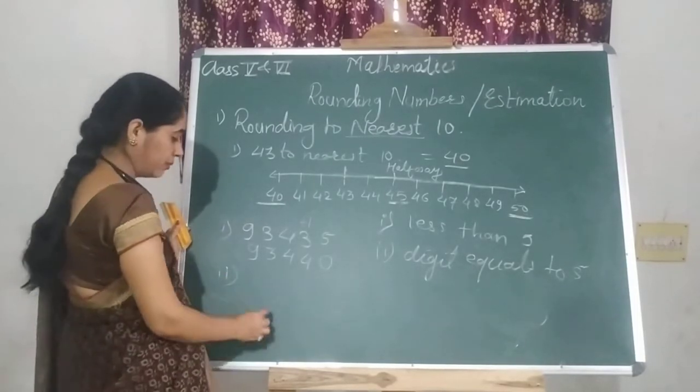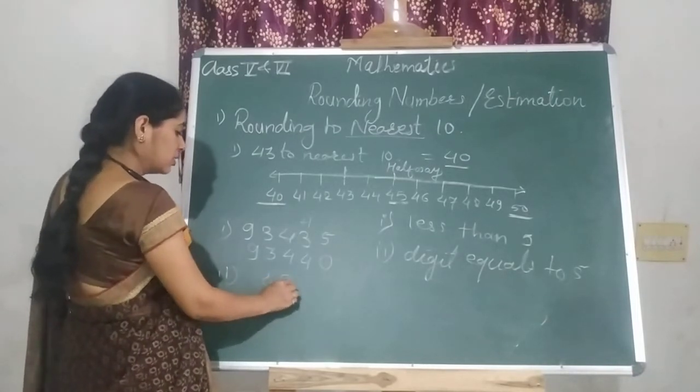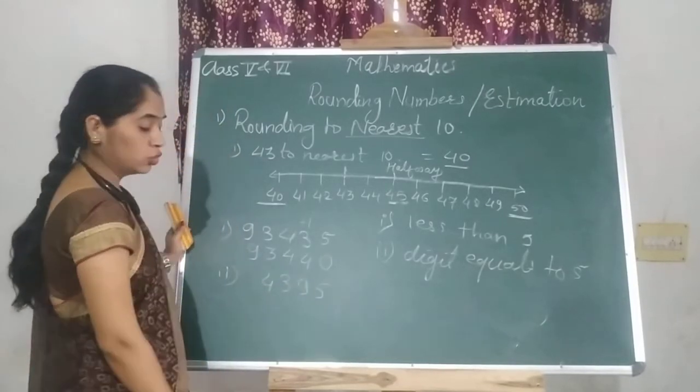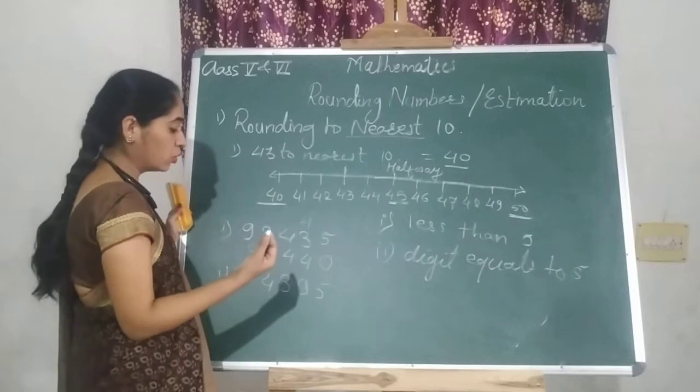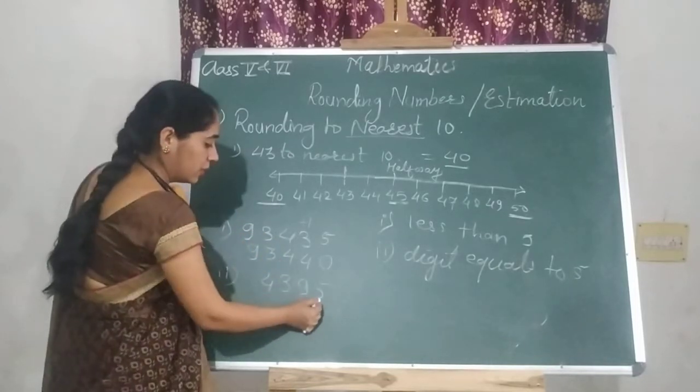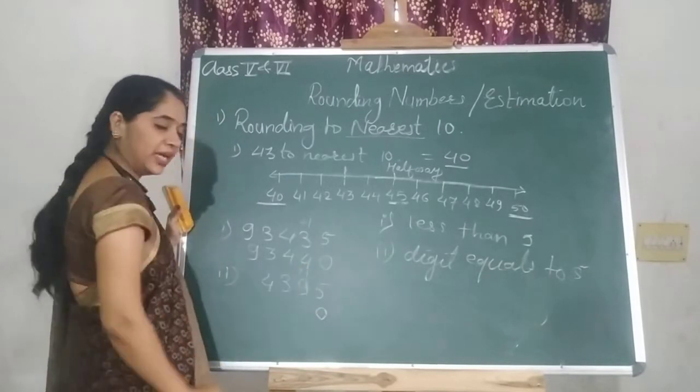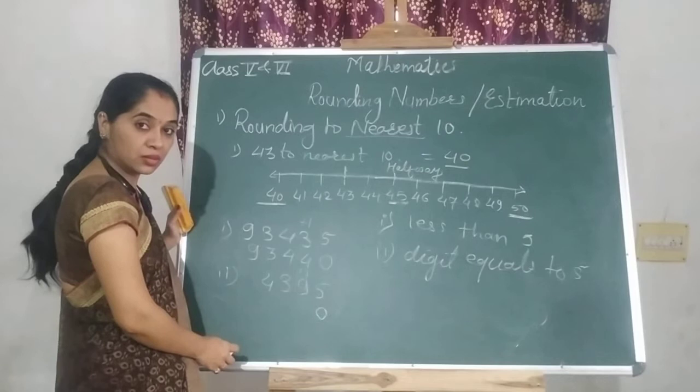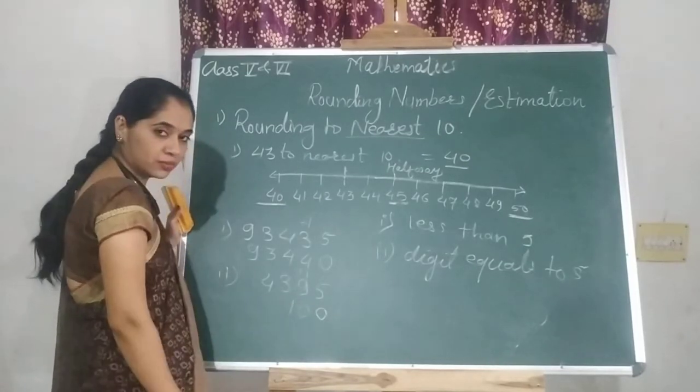We will see one more example. Suppose you have to round off 4,395 to the nearest 10. Now, what does the rule say? If it is 5, then replace it and add 1. Now, 9 plus 1 is 10. So do I have to write 10 over here? No.